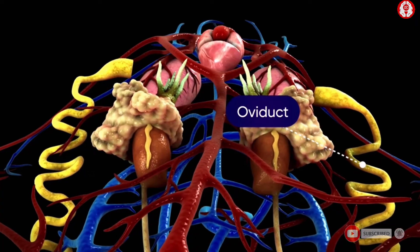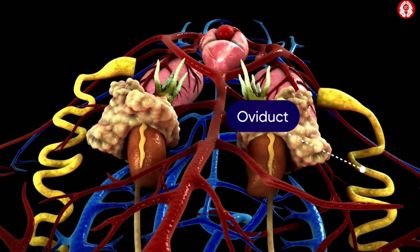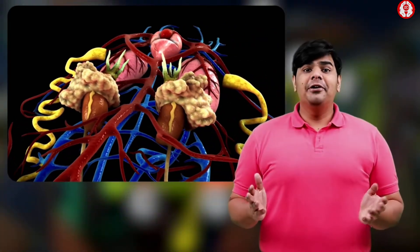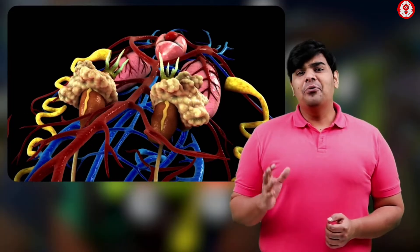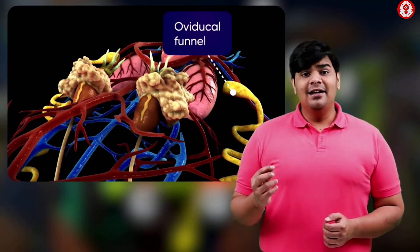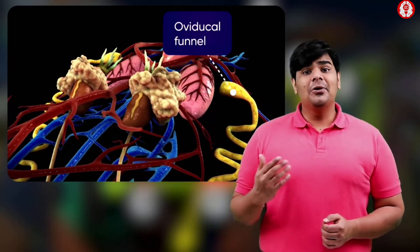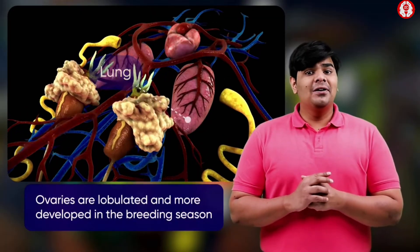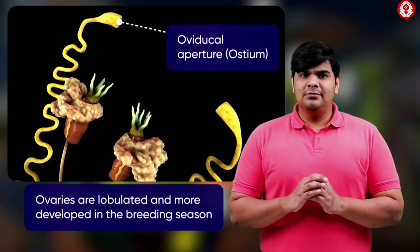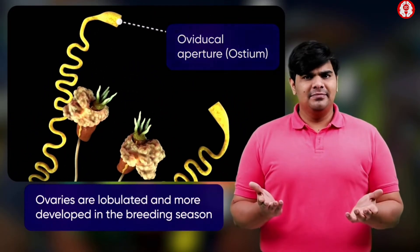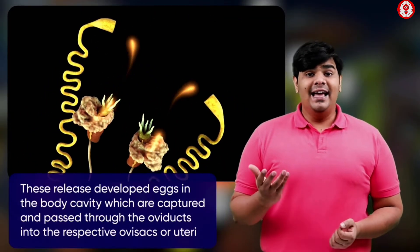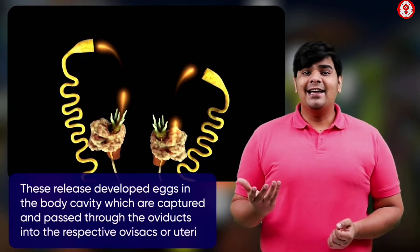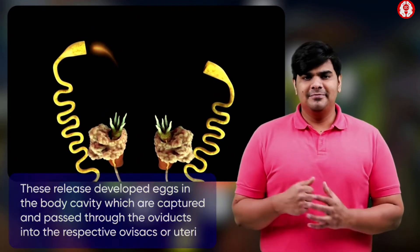A pair of oviducts is present, with each oviduct being divided into three parts. The anterior free end forms a wide and fringed oviducal funnel located on the dorsal side of the lung. Its opening is called the oviducal aperture or ostium. The eggs are released from the ovaries into the body cavity and are captured by the oviducal funnels.